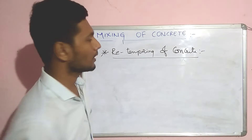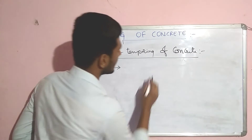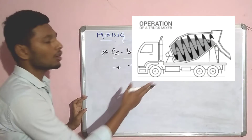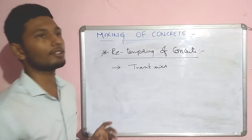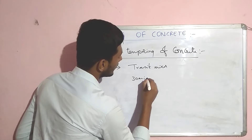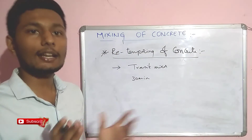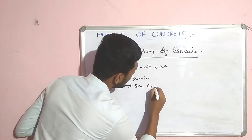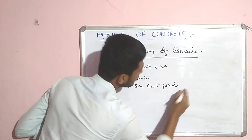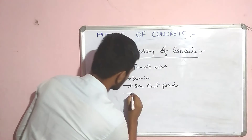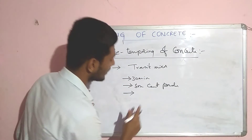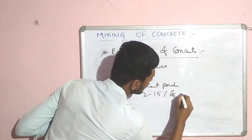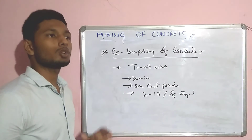Re-tempering of concrete — what is re-tempering? If concrete is placed in a transit mixer and it is halted for more than 30 minutes, it reaches the setting time of the concrete. To lower the setting time, some cement powder is added. This process is called re-tempering of concrete. After re-tempering, the concrete loses up to 2 to 15 percent of its original strength. Therefore, re-tempering should be avoided as much as possible.